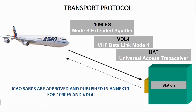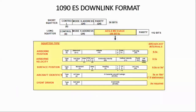The 1090 extended squitter downlink format consists of two different message sets. Short squitter: response signals have a 56-bit short message. Extended squitter: a 112-bit long message.